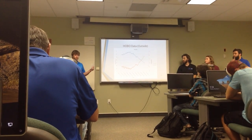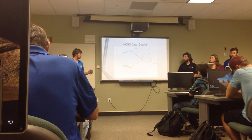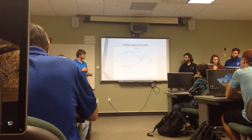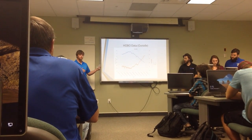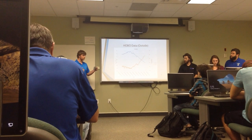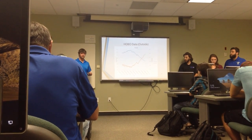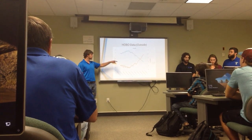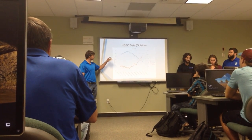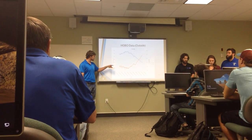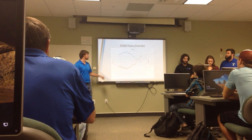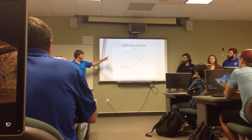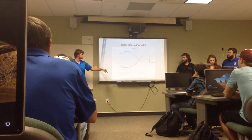This is a zoomed-in area of the data from the HOBO sensor placed outside the house, which we compared to the temperature inside. The top line is the temperature as it changes and the bottom one is relative humidity. You can see the temperature increased a little bit, almost up to 75 degrees, and then started decreasing.